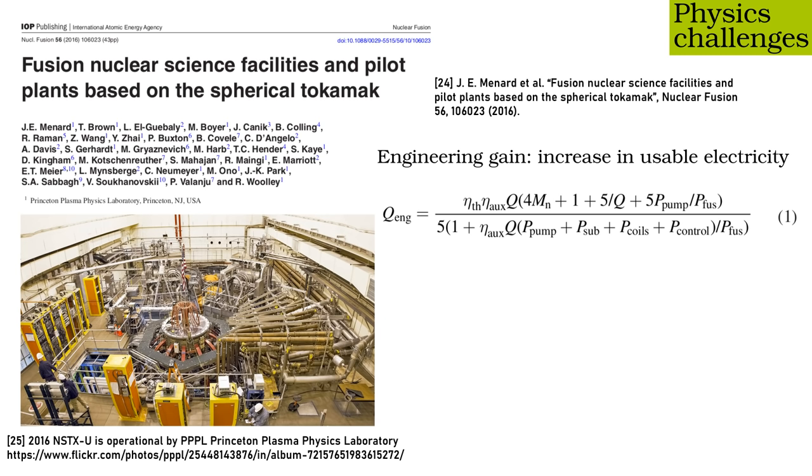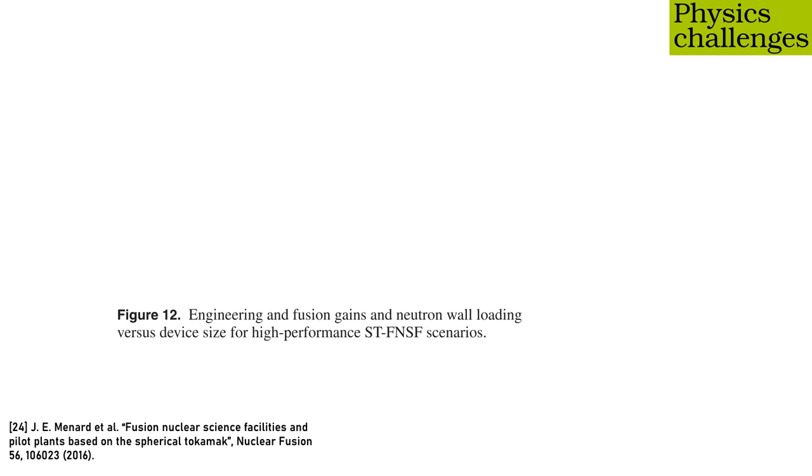in particular something they call the engineering gain, the true output of usable electrical power for a given input. The article painstakingly goes through realistic best case estimates for the necessary power to all the relevant systems like the pumps, magnetic coils and so on. You can check out this article in the engineering gain formula, but for now let me explain one of the figures. On the x-axis is the major radius of the spherical tokamak in meters, a measure of its size. The larger it is, the easier it is proportionately to confine the plasma and achieve gain.